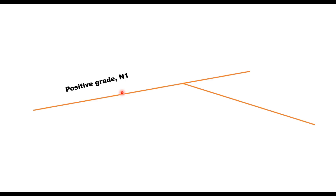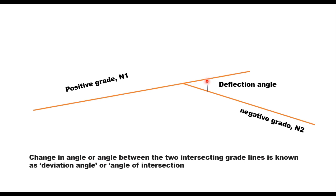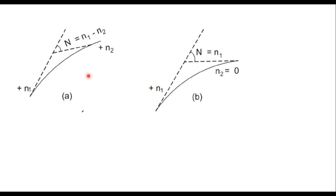These grades can be positive or negative. When the elevation rises with the distance, it is called a positive gradient, and when the elevation falls, it is called a negative gradient. The change in angle or angle between two intersecting grade lines is known as the deviation angle, deflection angle, or angle of intersection. A vertical curve is formed when two grades of different magnitudes meet at a point. For example, a positive steep gradient meets a mild positive gradient, forming a curve, or when a positive gradient meets level ground, there is also a change in gradient.